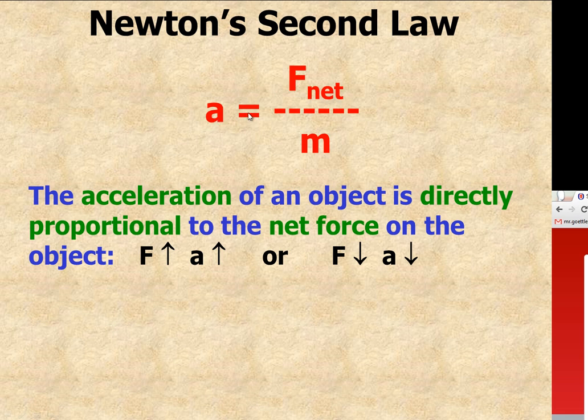This equation shows that if we had a bigger force divided by some mass, we're going to get a bigger answer or a bigger value for the acceleration. And conversely, if we had a smaller force, we would get a smaller acceleration.